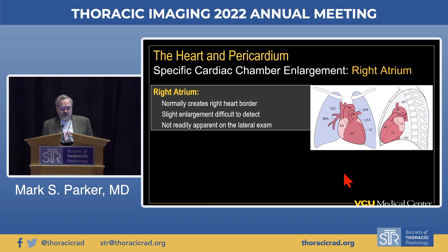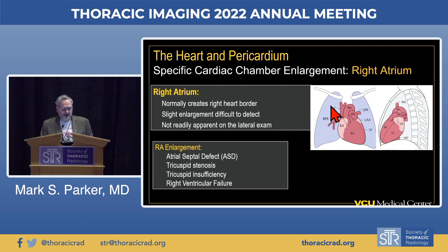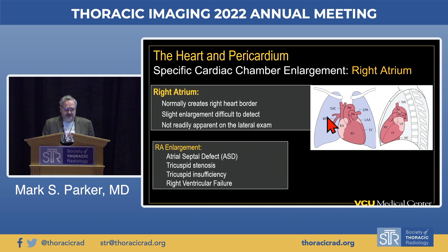The right atrium normally creates the vast majority of the right heart border on the frontal radiograph. Slight enlargement can be difficult to recognize and is not well appreciated on the lateral view due to superimposition upon other cardiac chambers. Causes of right atrial enlargement include atrial septal defects, tricuspid stenosis, tricuspid insufficiency, and right ventricular failure.